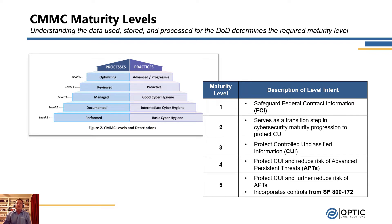At level one, we're just performing capabilities — we have the capability in place and making sure that we're protecting data, more of an informal approach. But as we move up the stack and get to level three, which is managed, organizations are required to have policies and procedures to define how they're going to manage their cybersecurity capabilities. And when we get up to five, we're proactively updating those policies and procedures for changes, threats, and technologies, and we're optimizing our cybersecurity program.